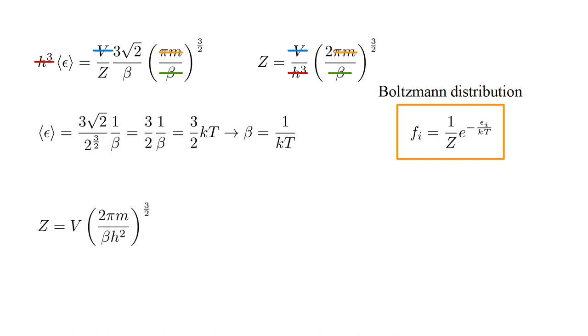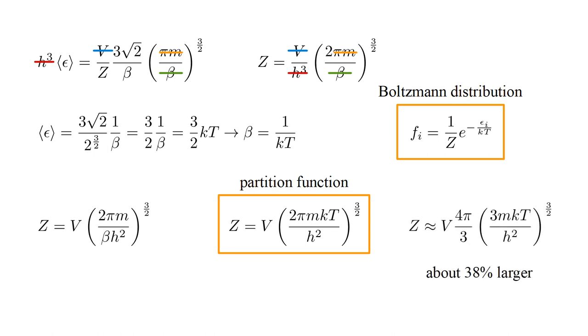Substituting for beta in our partition function expression, we arrive at Z equals V times the three-halves power of two pi mkT over h squared. Compared to our approximate formula, which was based on a simple volume calculation, we see that they have the same dependence on all parameters: V, m, k, T and h. They differ only in the constants, with the approximate formula being about thirty-eight percent larger than the precise formula. This justifies our interpretation of the partition function as the effective number of phase-space cells available to an atom.